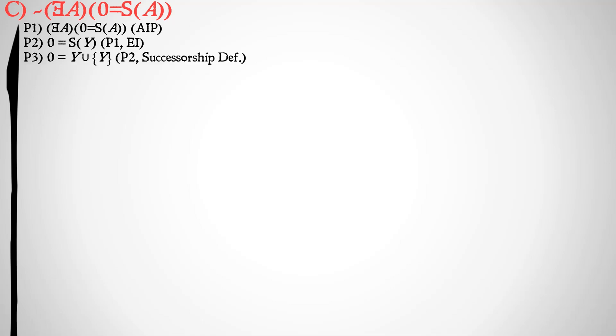We'll draw the line down. First, we're going to existentially instantiate A to be Y — some set Y — so zero is equal to the successor of some set Y. We're going to spend a lot of time with this set Y to show it's impossible for it to exist. We'll apply the definition of successorship: the successor of a number equals the union of that number and the set of that number.